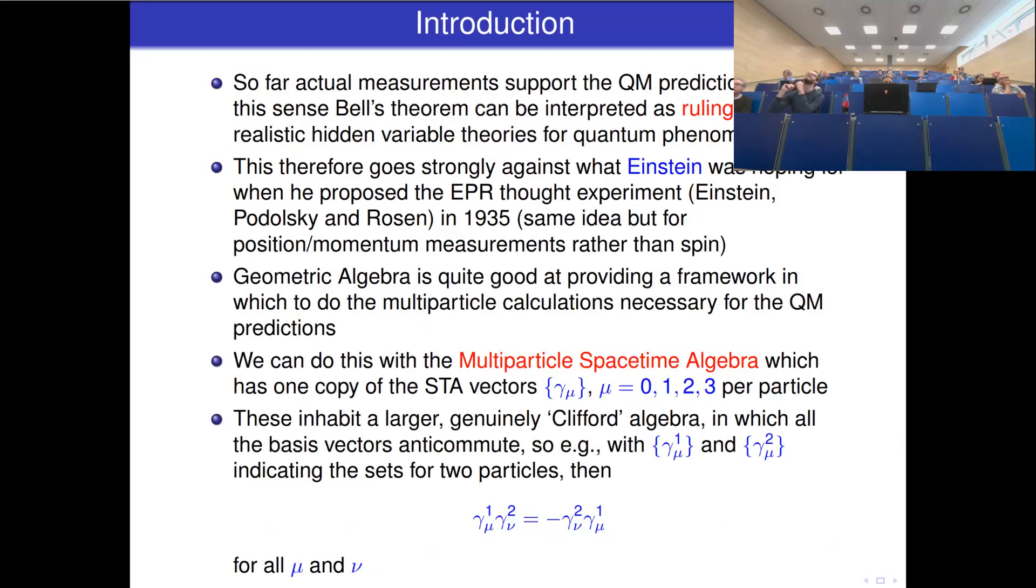So far, actual measurements support the quantum mechanical predictions. In this sense, Bell's Theorem can be interpreted as ruling out local realistic hidden variable theories for quantum phenomena, because it sets bounds on what we get for such theories, and these bounds are exceeded experimentally. This goes strongly against what Einstein was hoping for when he proposed the famous EPR thought experiment in 1935 for position and momentum measurements rather than spin. It was David Bohm and eventually John Bell who turned this into an experimental spin.